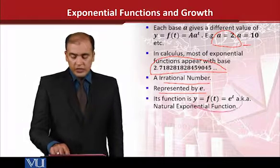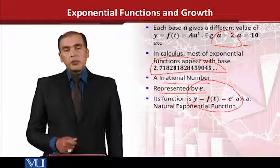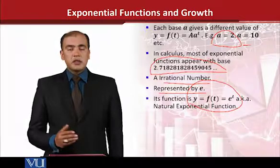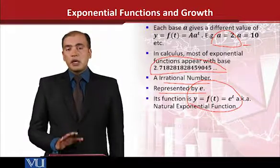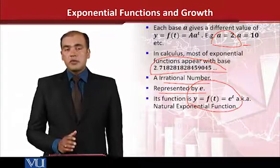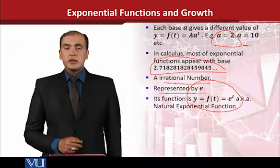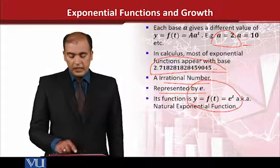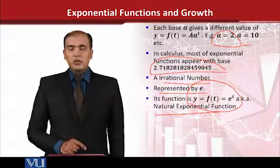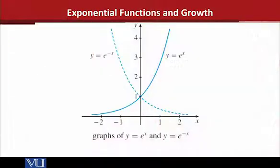The standard form will accordingly vary and you will see that e raised to the power t is appearing. There is no a anymore. We know about the value of e and that is 2.718. The proper name is natural exponential function because of its properties. Now this is the diagram for both possibilities.